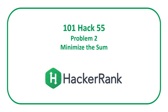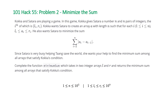Welcome to a Code Report solution video. In this video we're going to be covering the solution to problem 2 from the HackerRank 101 Hack 55 contest entitled Minimize the Sum. The problem states Koka and Sitara are playing a game. In this game Koka gives Sitara a number n and n pairs of integers,